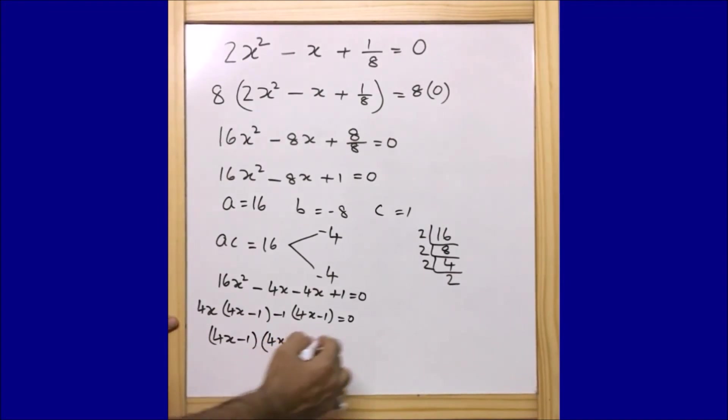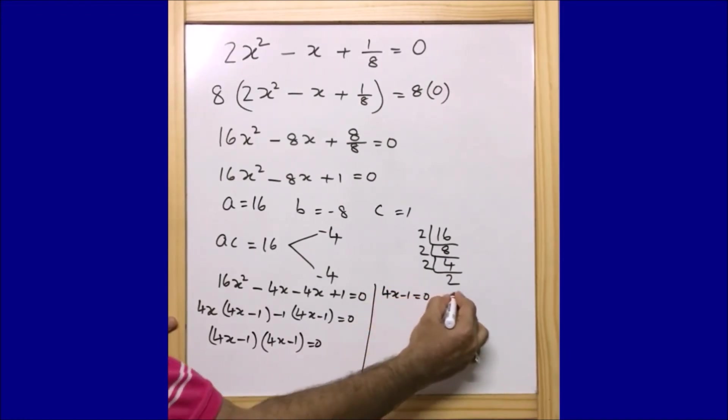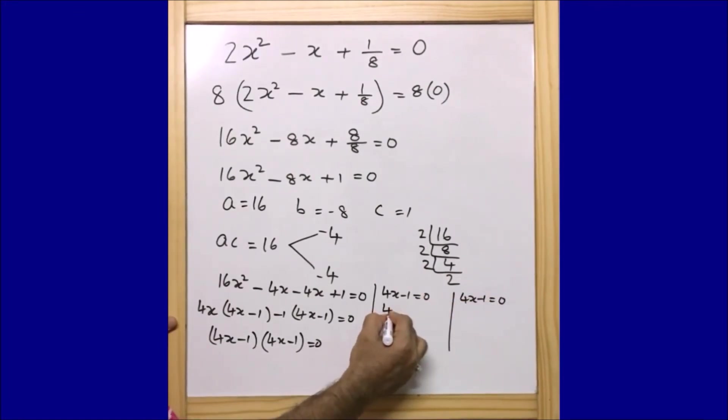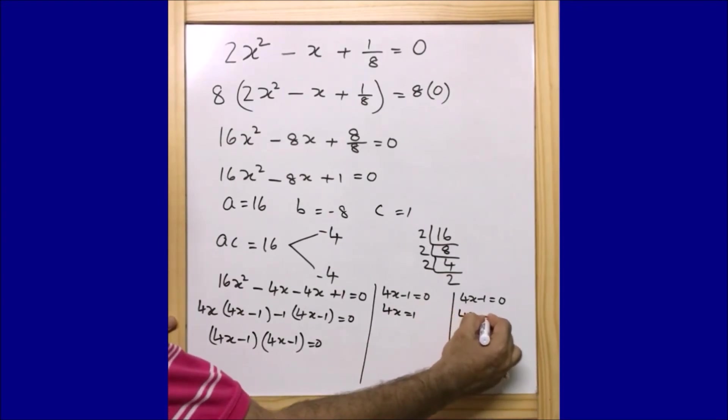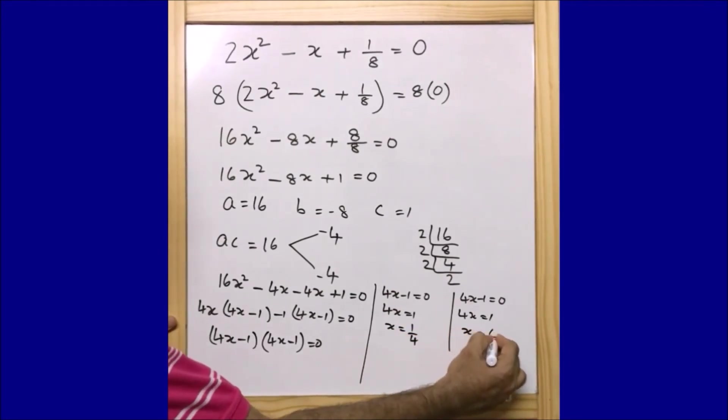Okay, so if I solve these two, I am getting 4x - 1 = 0 and the other part is similarly 4x - 1 = 0, or I can write 4x = 1. Similarly here also I can write 4x = 1, or x = 1/4. Here also x = 1/4.